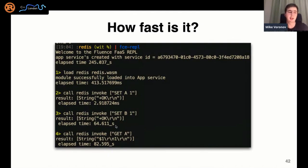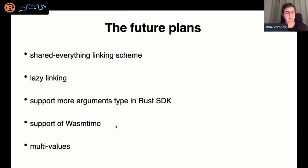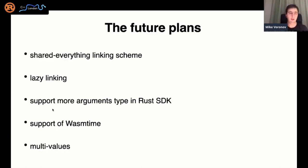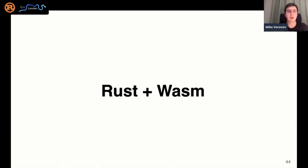We have a partially lazy linking scheme, so corresponding calls are much faster. The first call takes about three milliseconds, and subsequent calls are about 64 microseconds. I think that's just fast, especially since we haven't optimized FCE — we just follow best practices without using features like likely/unlikely or HFT tools. Our plans include implementing the shared-everything linking scheme, supporting full lazy linking, supporting more argument types in the Rust SDK like boxed types and enums, making FCE virtual-machine-agnostic to support Wasmtime, and also supporting multi-values.